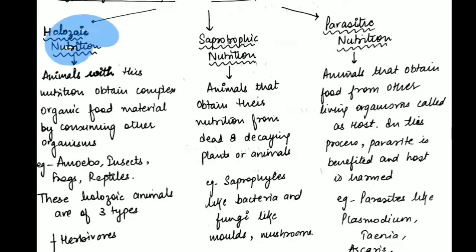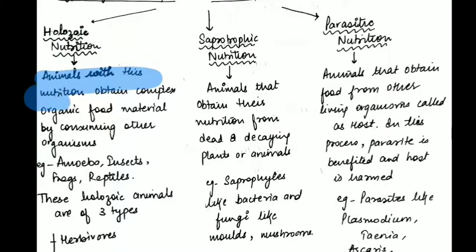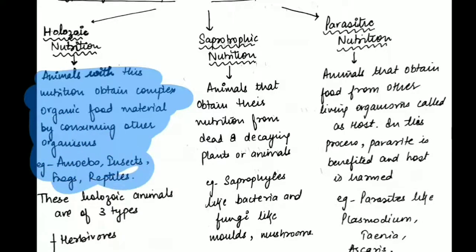In holozoic nutrition, the animals obtain complex organic food material by consuming other organisms — that is, the organism obtains food by eating another full organism. For example, herbivores like a cow eat grass as their food.